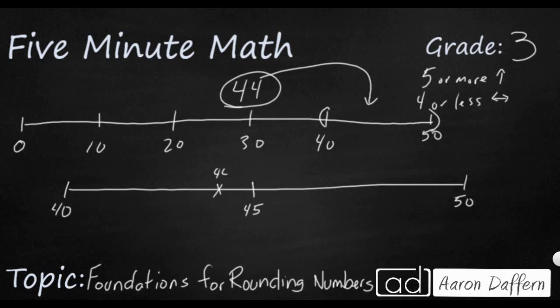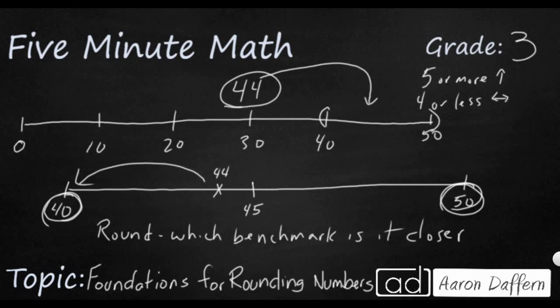So if I wanted to round a number, rounding is asking you which benchmark number is it closer to. In this case, the benchmark numbers that I used are the 40 and the 50. Sometimes you won't round to the 10s place, sometimes you round to the 100s place or the 1000s place. But the 44 comes between these two multiples of 10. And we can see visually on our number line that the 44 is going to round to 40, because it is closer to 40.